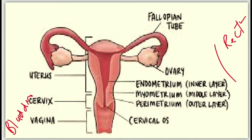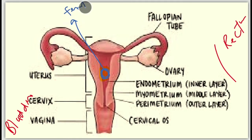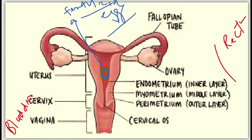By the grace of Almighty Allah, the main function of the uterus is to nourish and house a fertilized egg until the fetus or offspring is ready to be delivered. So basically, it is the house of the fertilized egg until the fetus is formed and is ready to be delivered, and it is placed inside the uterus.